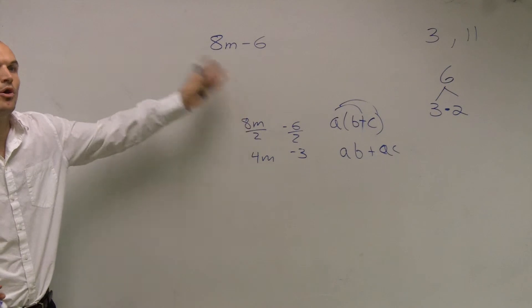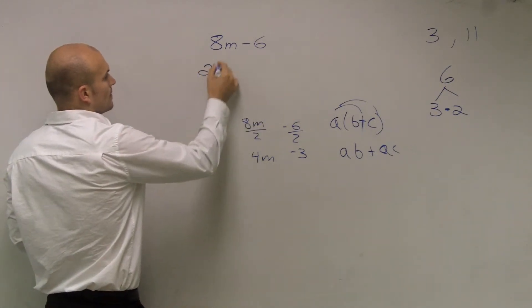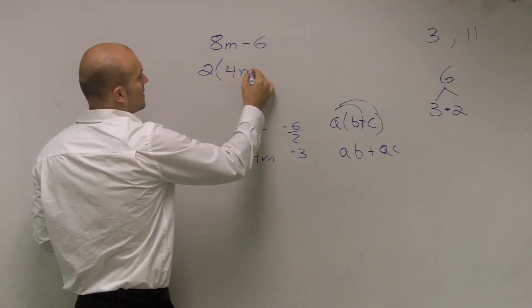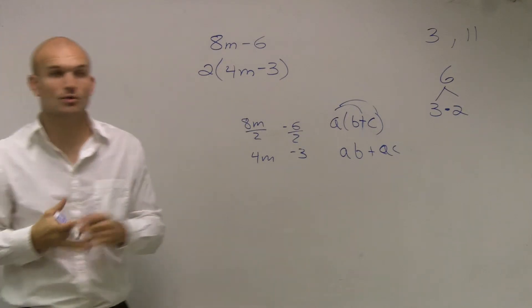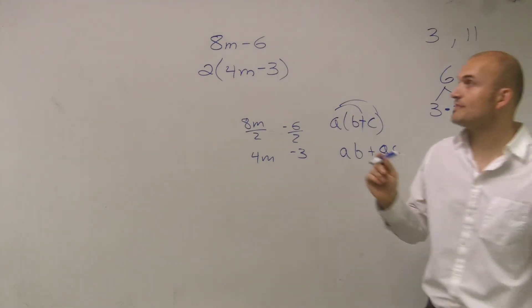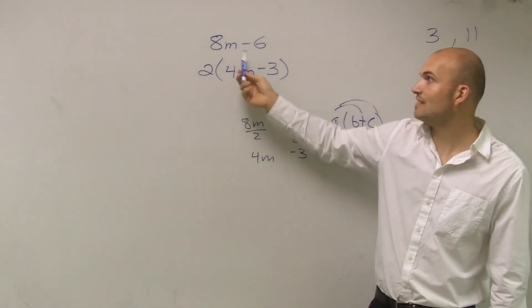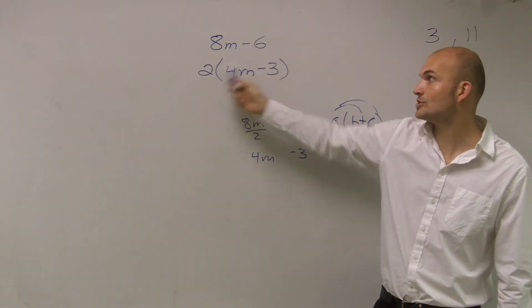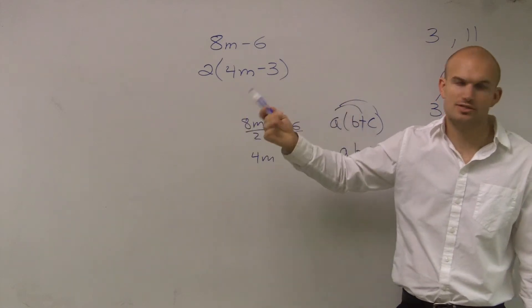So what I'm going to do is I'm going to pull out or divide out by 2. So when I pull them out, I've now created this to become 4m minus 3. So what you do is you find the greatest factor, you find the greatest factor and you factor it out or divide it out. So when I divide 8m by 2, I get 4m. When I divide negative 6 by 2, I get negative 3. And let's just double check our work.